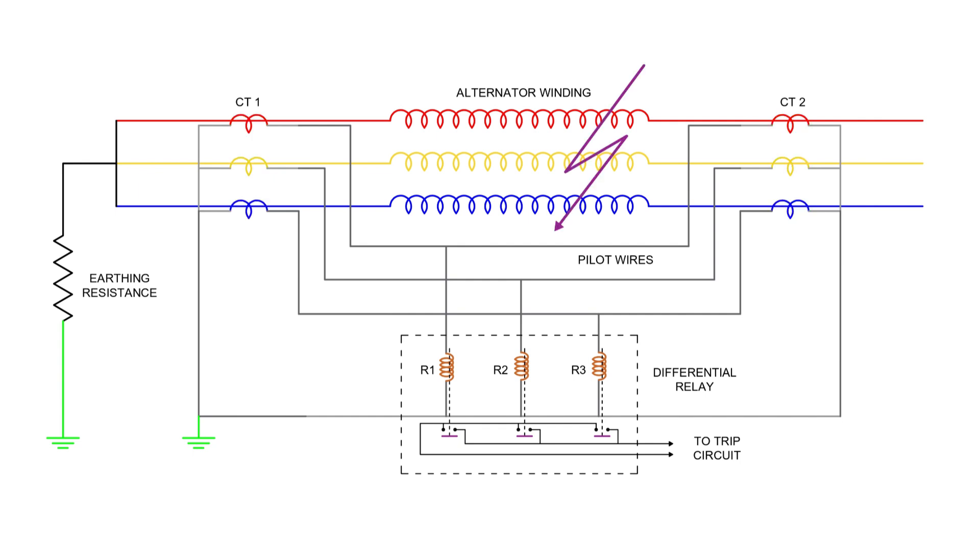But the moment a fault occurs, this symmetry is broken. The imbalance results in current flowing through the relay coil corresponding to the faulty phase. These are electromagnetic relays, designed to act instantaneously to trip the breaker and clear the fault as quickly as possible.